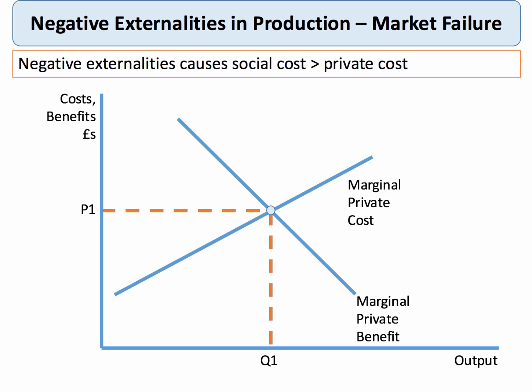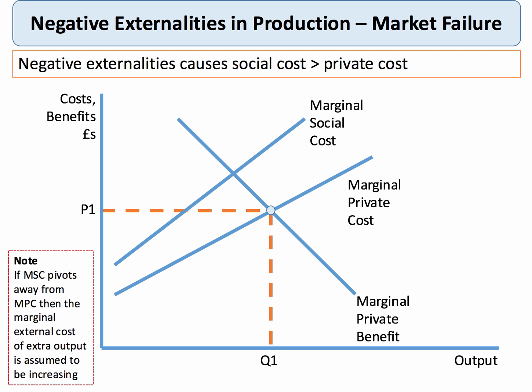Social cost is private cost plus external cost. In this diagram, P1, Q1 is a free market optimum — a private optimum — where the marginal private cost of production is being equated to the marginal private benefit. However, if there are negative externalities, then the marginal social cost curve lies above the marginal private cost curve because we're adding in some external costs.